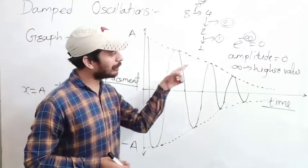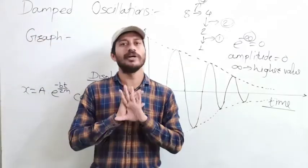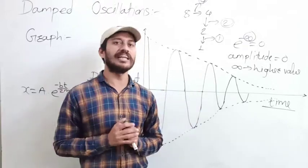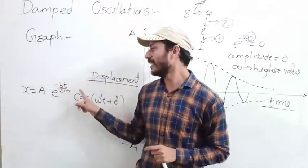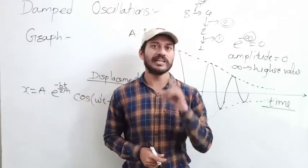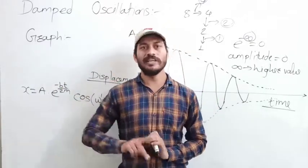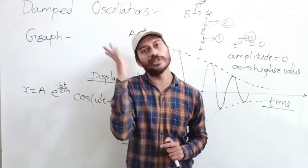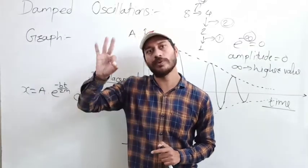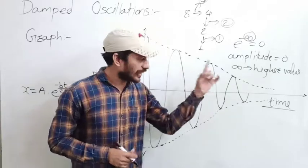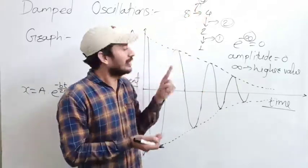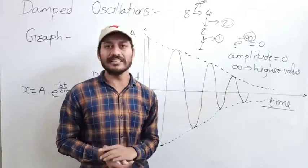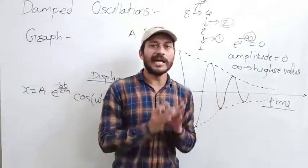The first conclusion is: in damped oscillation, amplitude is variable — amplitude never remains constant. Amplitude goes on decreasing with respect to time. The amplitude decreases in terms of a ratio, and this continues until the oscillation completes.